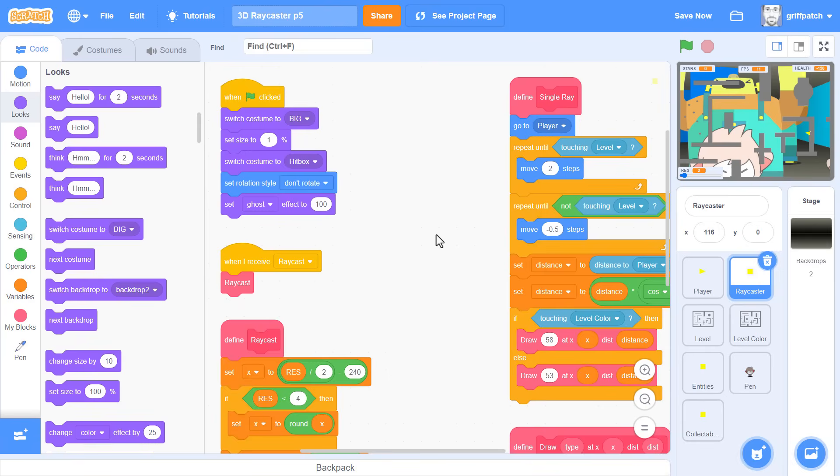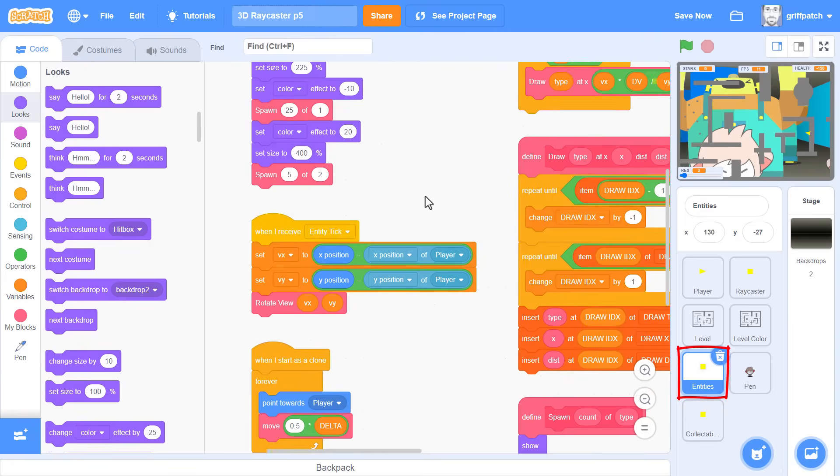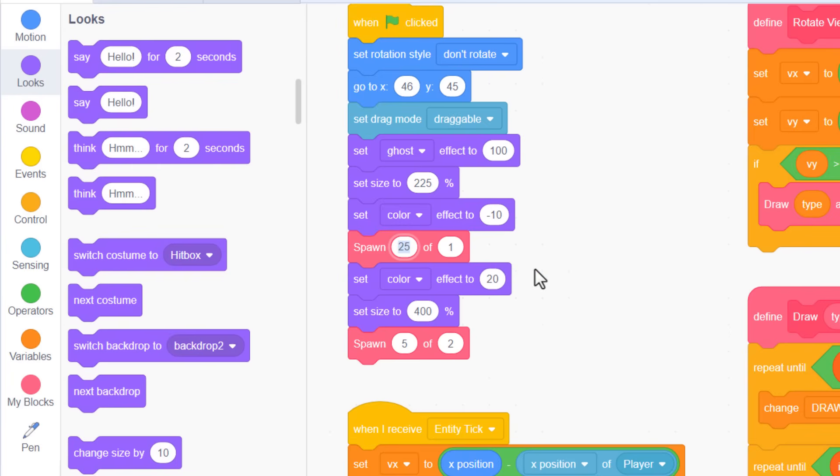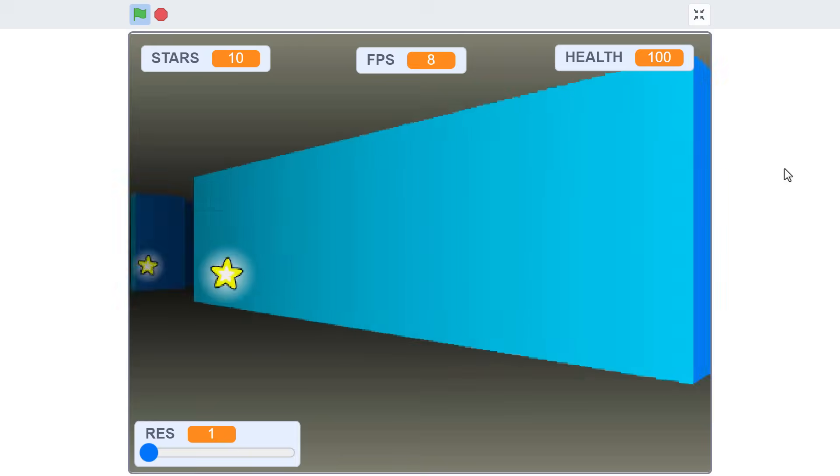Hold on though, the enemies are always getting in the way. I'm going to remove them temporarily. Just click into the entities sprite, and reduce the spawn counts to 0. So, even at a resolution of 1, things are not looking absolutely hopeless speedwise.